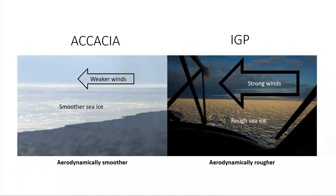The drag coefficients were much greater during IGP than during Acacia, implying that the sea ice was much rougher during IGP. Also, the winds were typically stronger during IGP, and the combination of stronger winds and a rougher surface means that conditions were aerodynamically rougher during IGP.